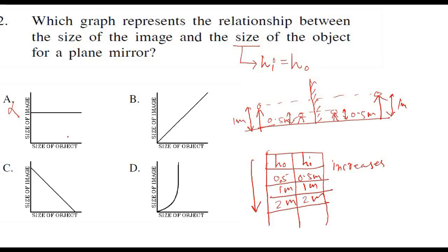The height of the object and height of the image are both increasing, so only options B and D are possible. Options A and C are wrong — in one, height of object increases but image height stays same; in another, height of object increases but image height decreases. The correct graph is the one where height of object and image increase proportionately — if you double one, the other doubles too. So the correct graph is this one.